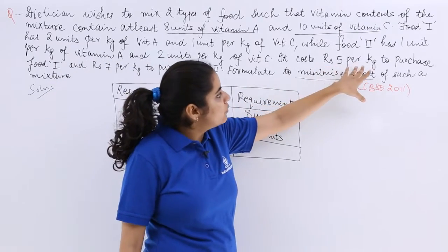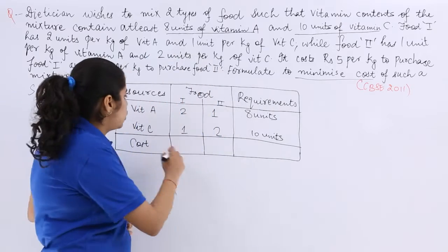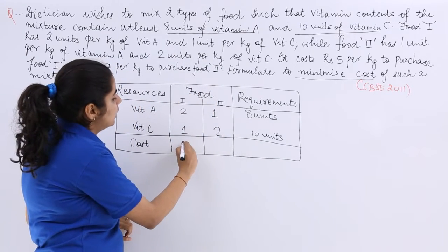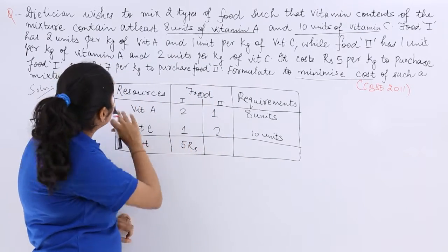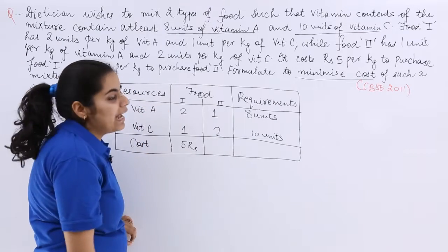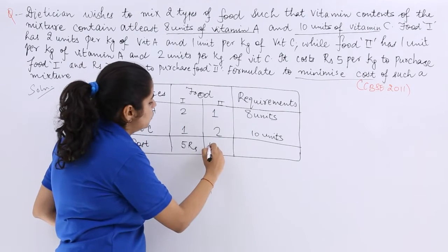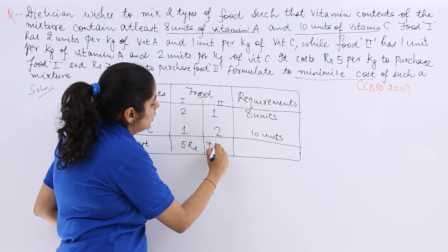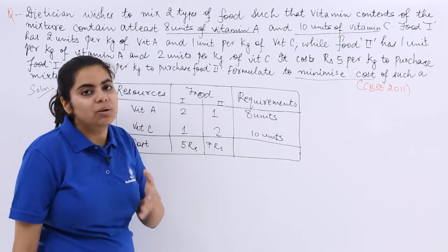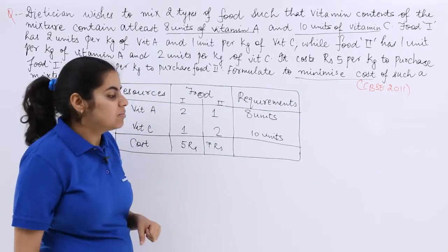Next it costs 5 rupees per kg. So cost is 5 rupees per kg for food number 1 and it is 7 rupees per kg for food number 2. The cost has to be minimized.